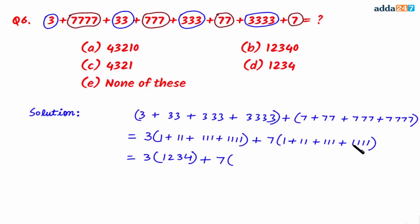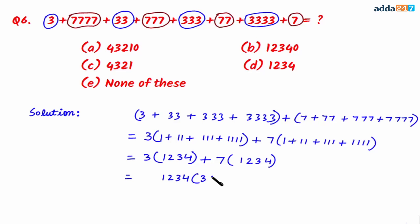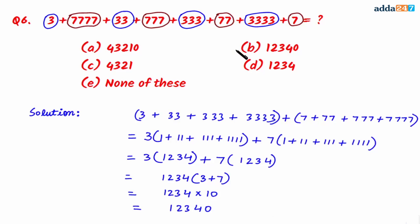Similarly, taking 3 common from the other group also gives 3 multiplied by 1234. Combining, we have (3 + 7) multiplied by 1234, which is 10 multiplied by 1234, equaling 12340. So option B is the correct answer.